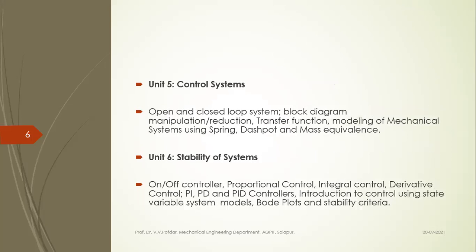In Unit 5 we'll study control systems — open-loop and closed-loop control systems, block diagrams, block diagram algebra, and the reduction rules of block diagrams. Then we'll study how to mathematically model various mechanical elements and find out the transfer functions of these systems, including typical spring-mass-dashpot systems and their equivalents.